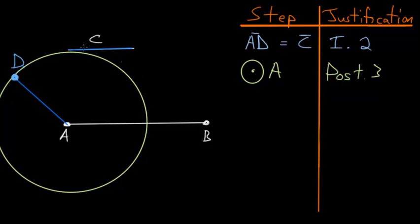Now that we have the circle drawn, we can label this point here, where the circle intersects our starting line AB. We'll call this point E.